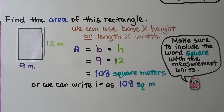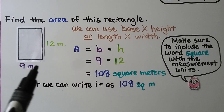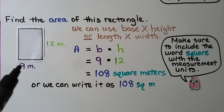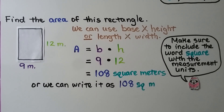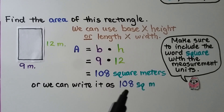We need to find the area of a rectangle without squares drawn inside — that's okay, we don't need them. Using base times height or length times width, we have a base of 9 meters and a height of 12 meters. We do 9 times 12, which equals 108 square meters. We can also write it as 108 sq m, but make sure to include the word 'square' — it's 108 square meters, not 108 meters.